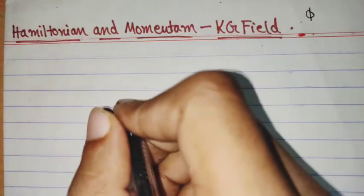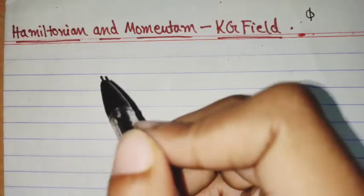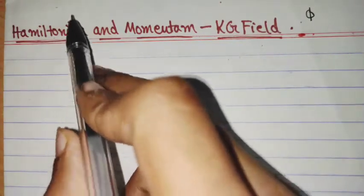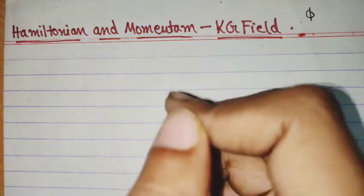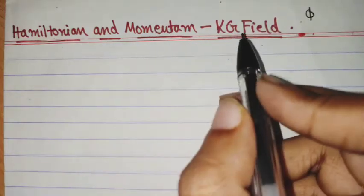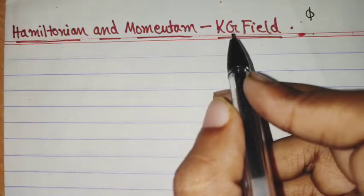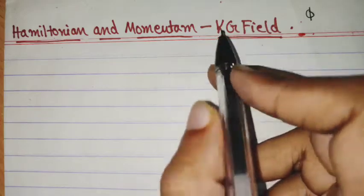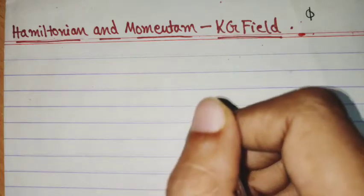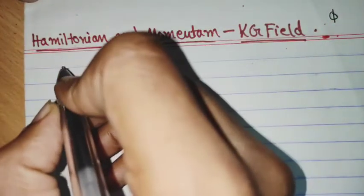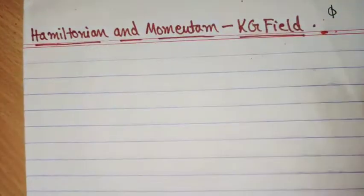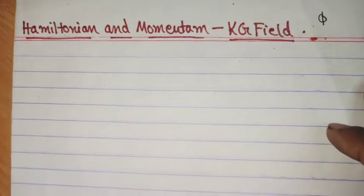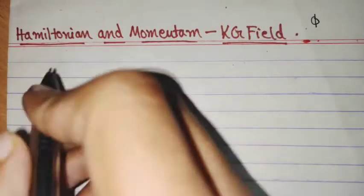Well hello friends. In this video I will be discussing calculating the Hamiltonian, the form of the Hamiltonian and the momentum operators for the free field theory concerning the Klein-Gordon field or the real scalar field. We have discussed that when we do the canonical quantization, we can perform mode expansions to get our field operators.